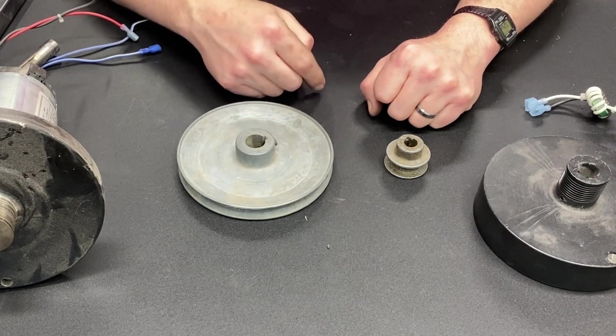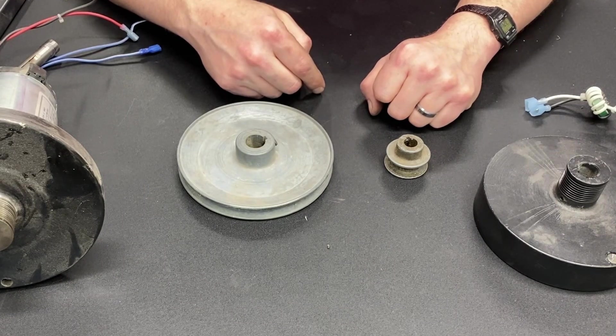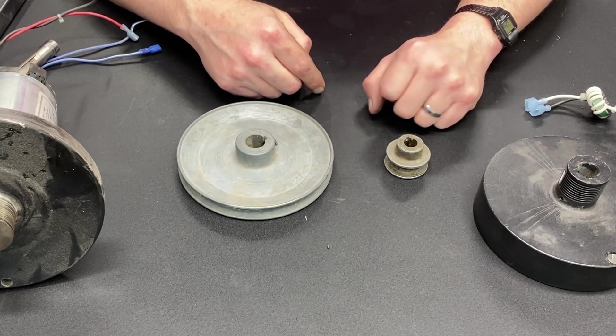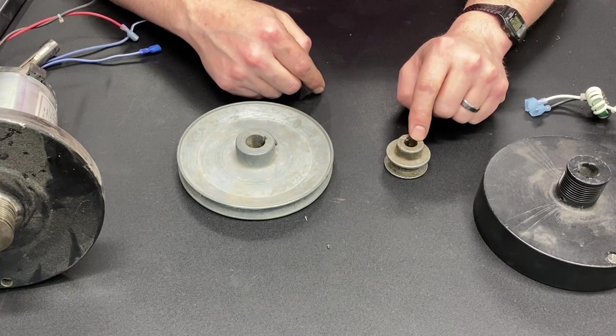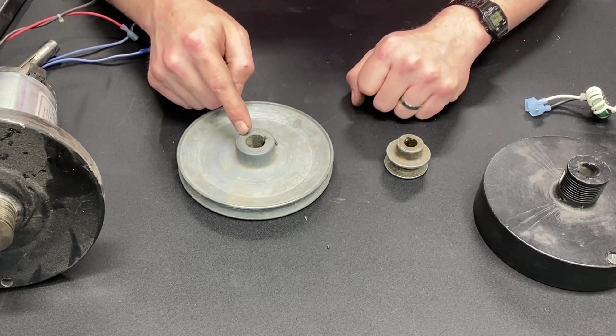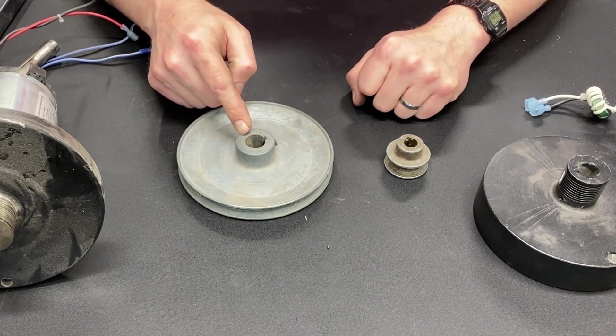In losing those RPMs, you've gained torque. So if you have one foot-pound coming out of this and now you're going to this, you now have six foot-pounds of torque.